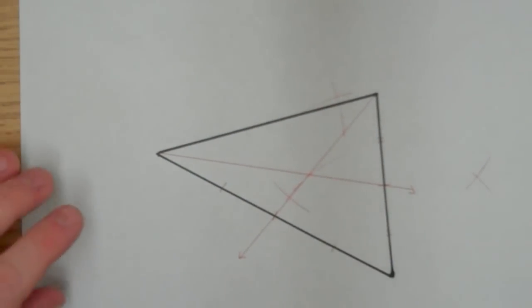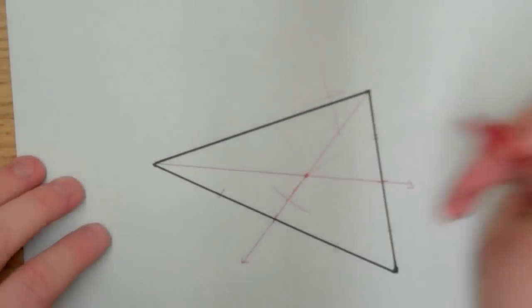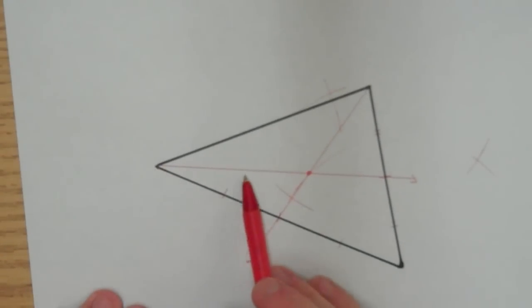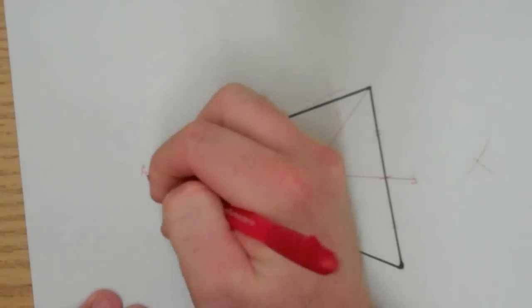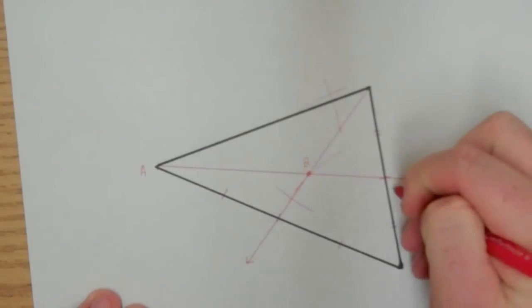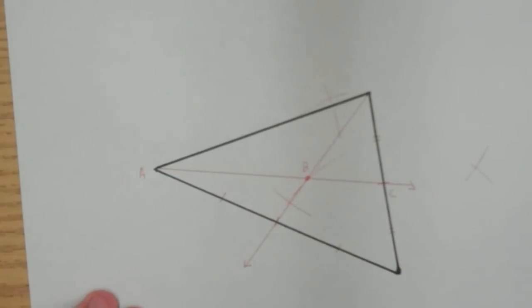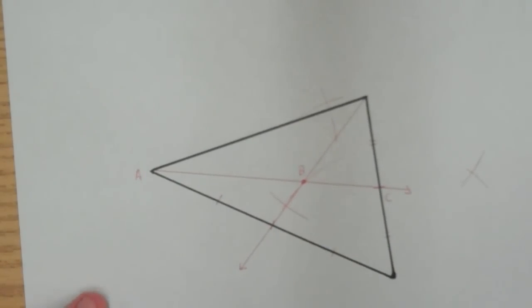So, the centroid would be this point right there. That's the centroid where the two medians intersect. And as you recall, the big deal with the centroid is that it splits these medians into segments that are of the ratio 2 to 1. So, that means that this segment, we'll call this A, and we'll call this B, and we'll call this C. What I actually know now is that AB to BC are in the ratio of 2 to 1, or AB is twice as long as BC. And that's centroid.